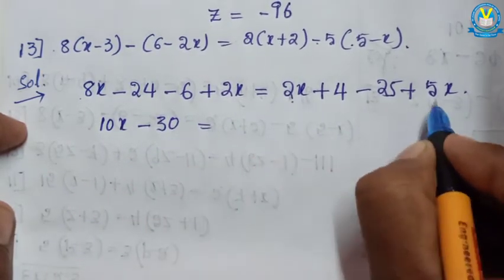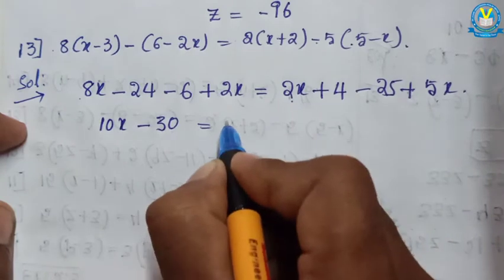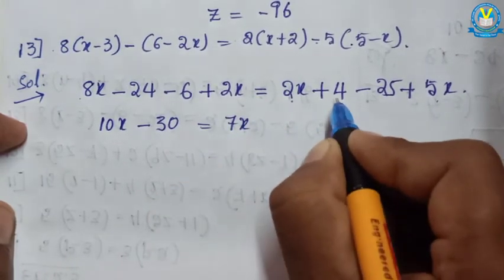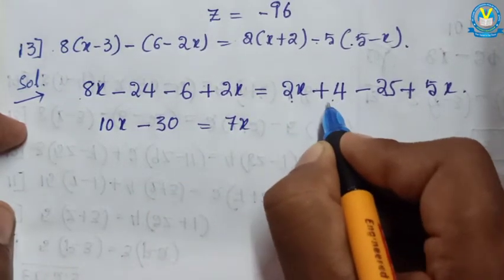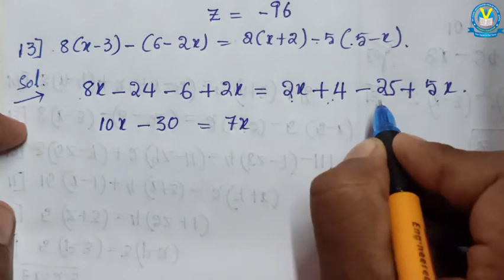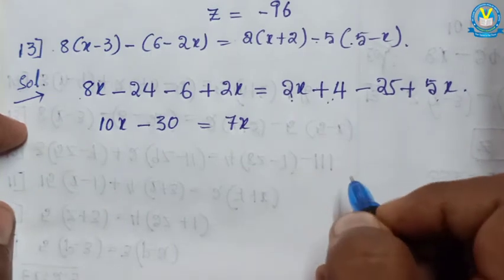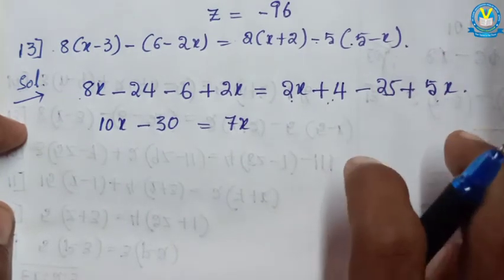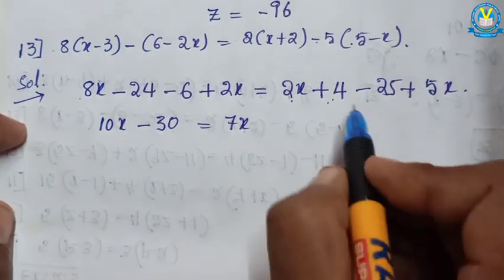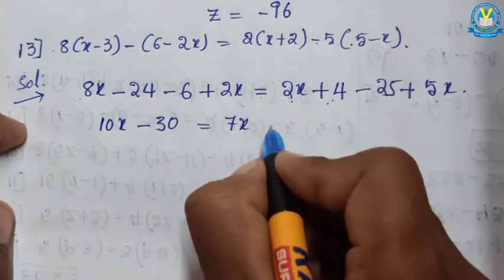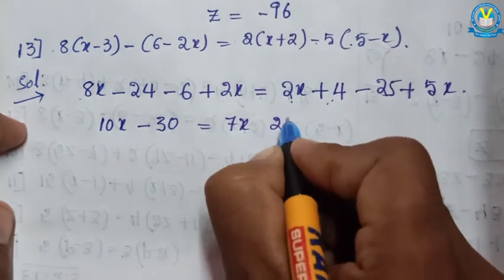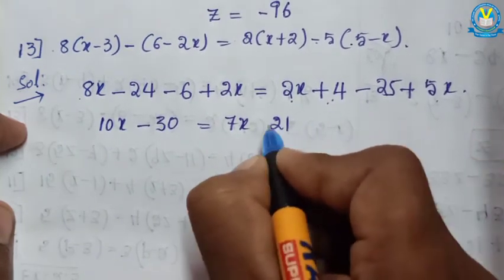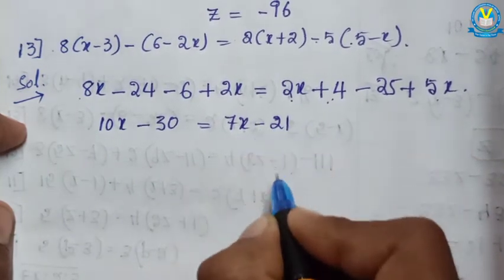On the right side: 2x and 5x, both having same sign, addition gives 7x. Plus 4 and minus 25 — different signs, subtraction: 25 minus 4 gives 21. Using bigger value sign, that is minus 21. So we have 10x minus 30 equal to 7x minus 21.